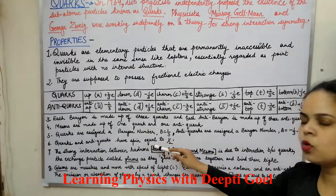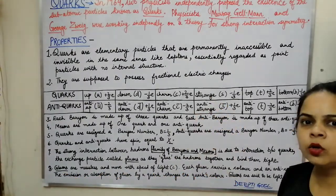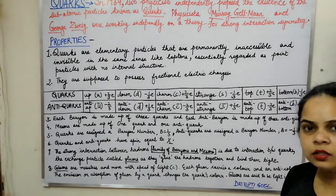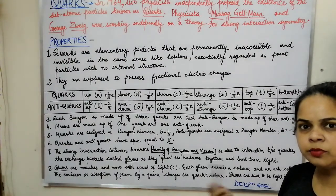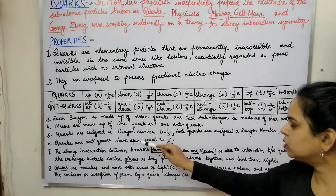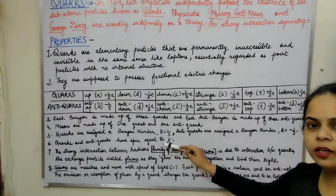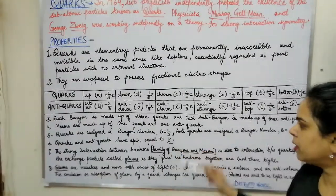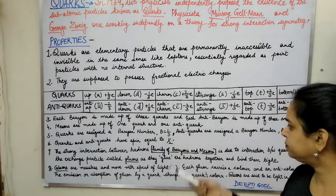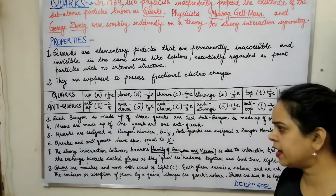Quarks and anti-quarks are also having a spin — they are moving with a left-handed spin or a right-handed spin. The spin number assigned to the quarks and anti-quarks is ±1/2, where it could be left-handed or right-handed.